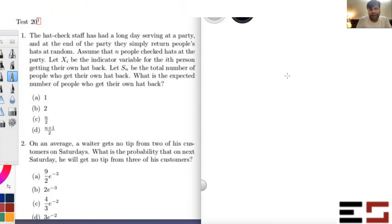So let Xi be the indicator random variable for the ith person getting their own hat back. So basically X1 takes value one if individual one gets his own hat back, zero otherwise. X2 takes value one if individual two gets his own hat back and zero otherwise and so on and so forth.